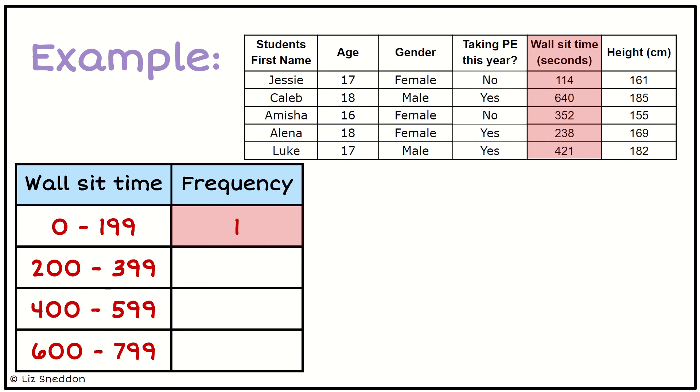Now let's look at the second category between 200 and 399. We've got two values: 352 and 238. So we've got a frequency of 2.